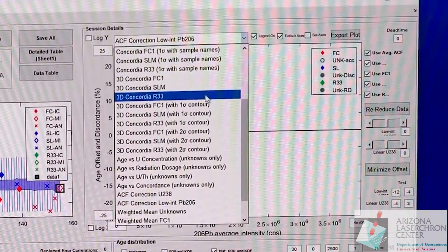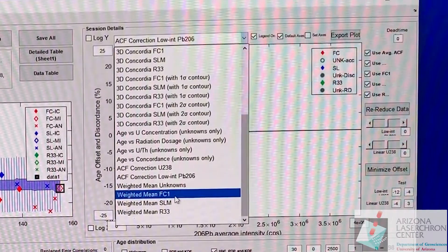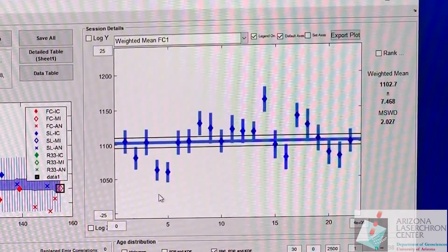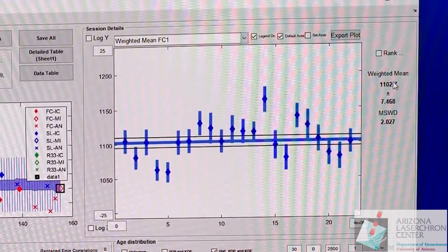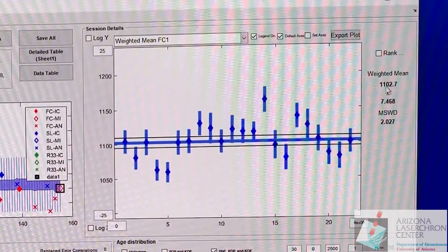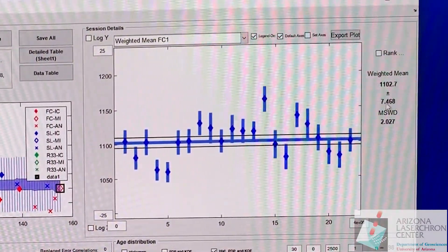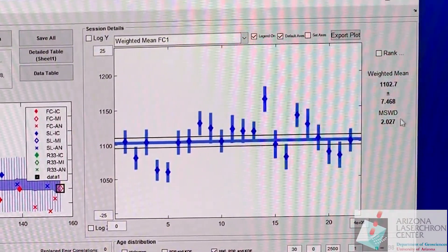The other thing you might want to look at are the weighted means for the different standards. If we take a weighted mean of FC, we have the weighted mean. We're actually really close to the known age of about 1099. This is plus or minus at one sigma.